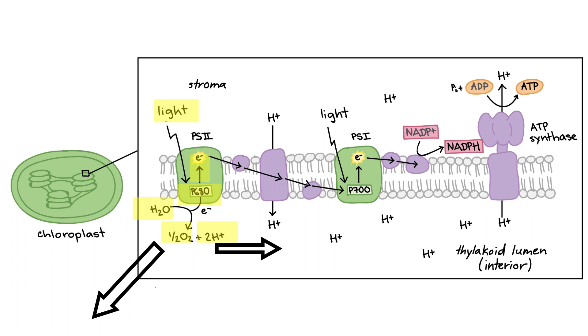Meanwhile, the excited electron that left P680 is in a high energy state and is transferred to different molecules. As that happens, it goes from a high energy state to a low energy state. As the electron loses energy, that energy is used to bring hydrogen molecules from the stroma into the lumen, creating a concentration gradient where the hydrogens are trapped.